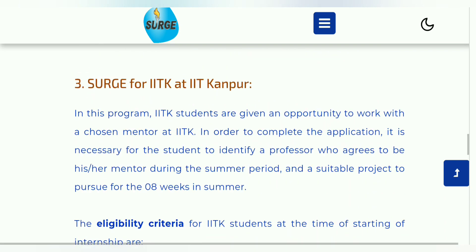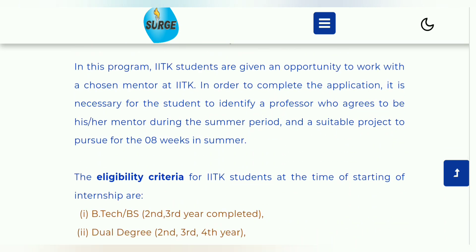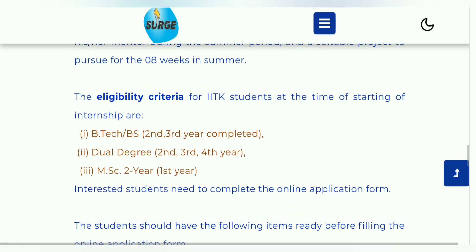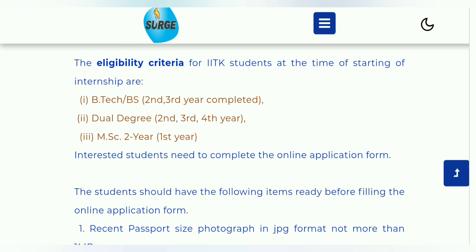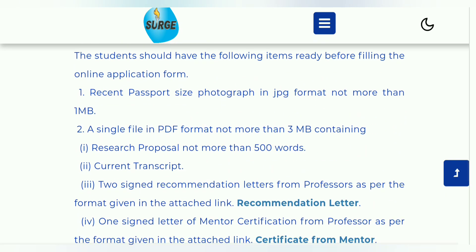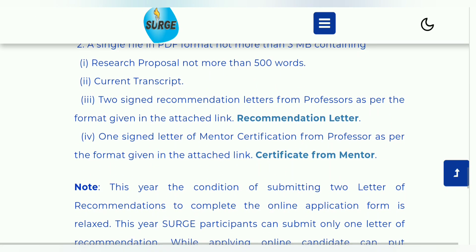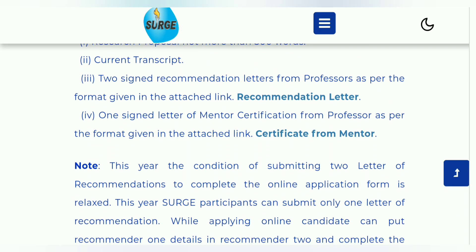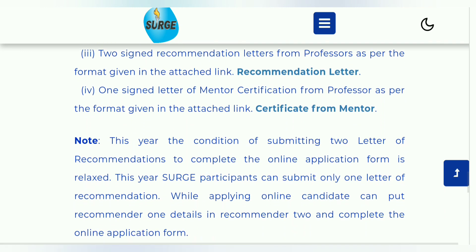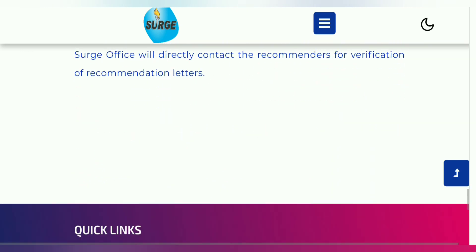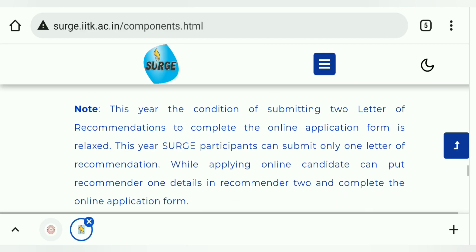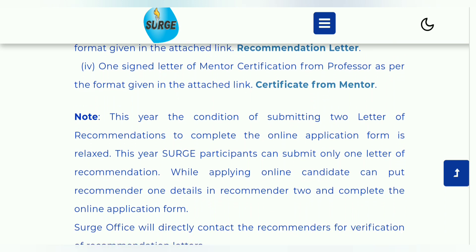IIT Kanpur के students का eligibility criteria same as the non-IIT Kanpur students है, और documents भी same — recommendation letter, research proposal, photograph, और current transcript। ये जो eligibility criteria मैंने discuss किया — ये सारी things, कौन-कौन सा student apply कर सकता है, कौन-कौन से documents चाहिए — ये अच्छे से follow करना, उसके बाद ही apply करना। Application fees 500 rupees है।